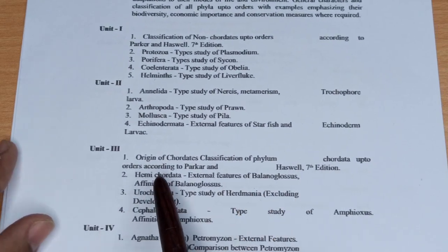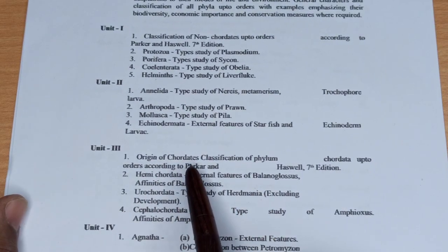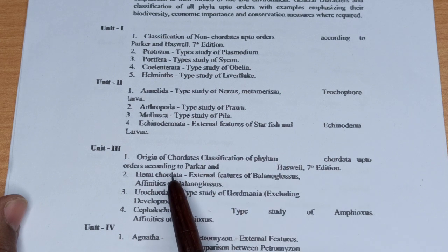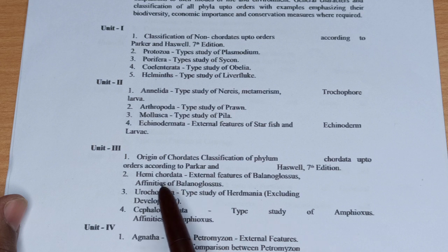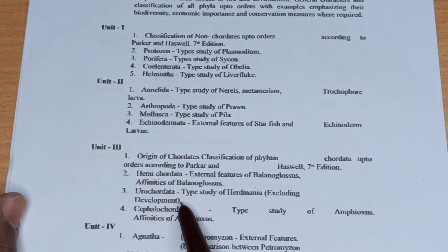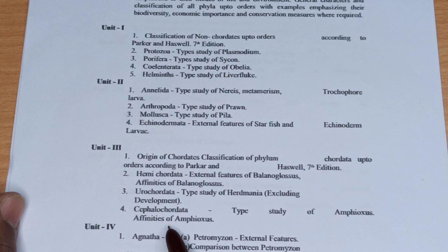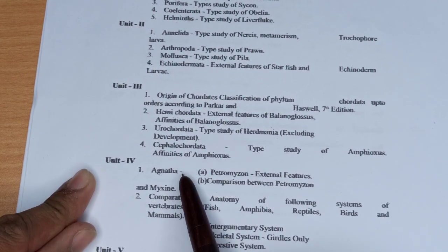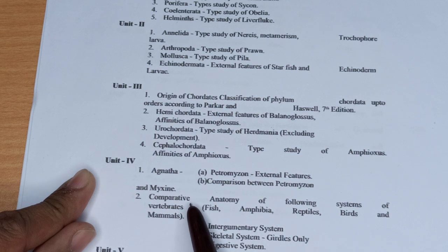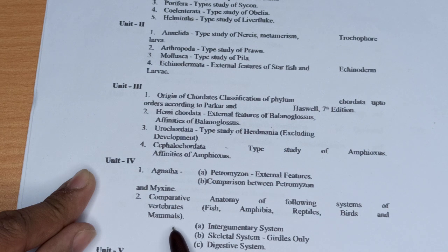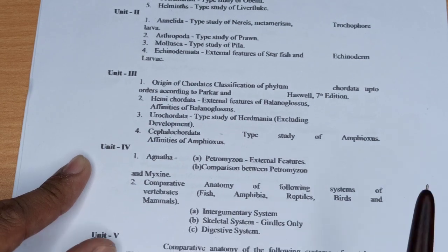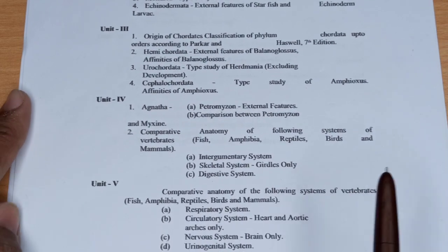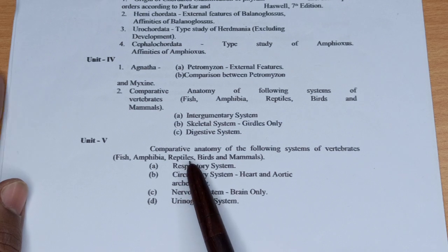Unit 3 में Origin of Chordates और classification of phylum chordates देखेंगे — Hemichordata, Urochordata और Cephalochordata के बारे में। Unit 4 में comparative anatomy of vertebrates: Fish, Amphibia, Reptile, Birds and Mammals के बारे में देखेंगे।